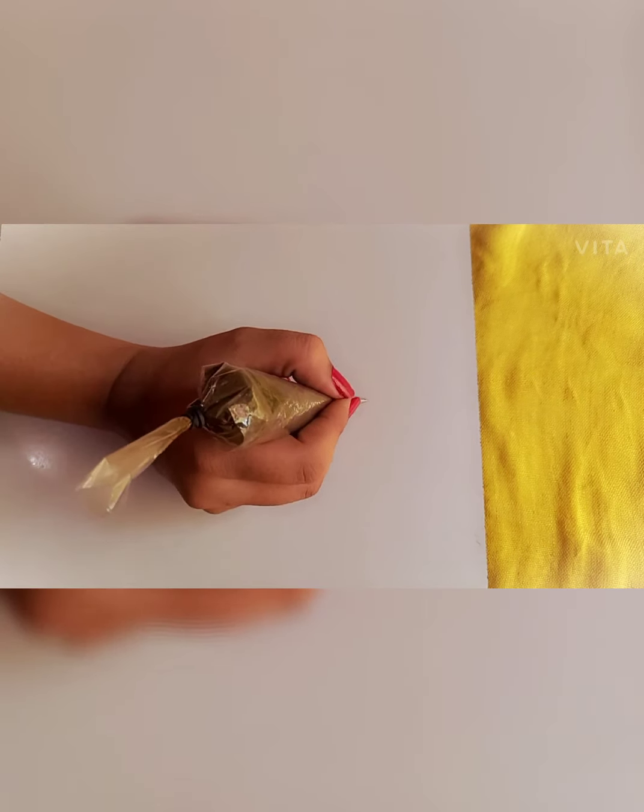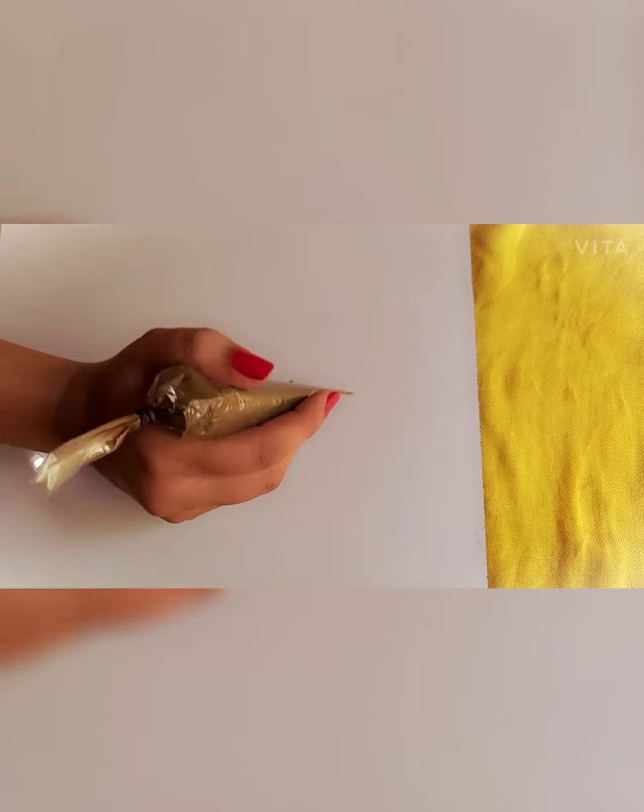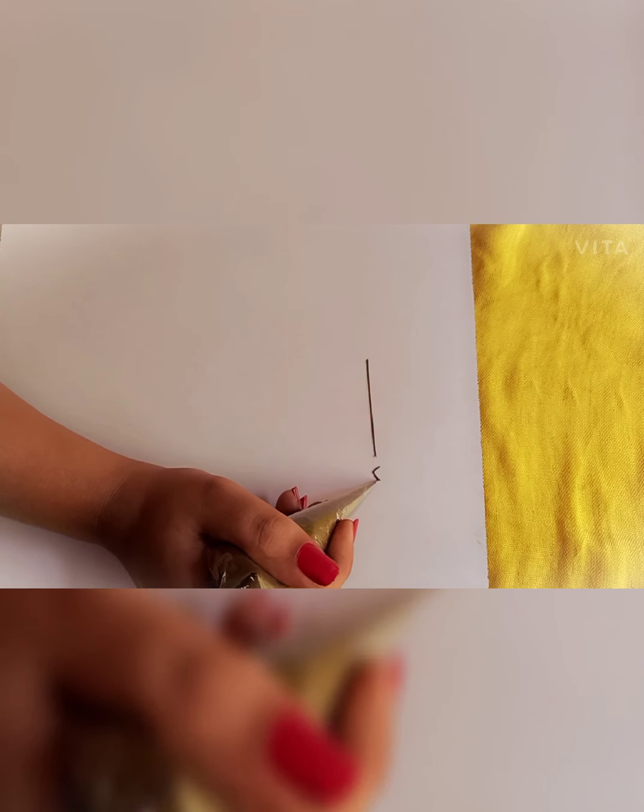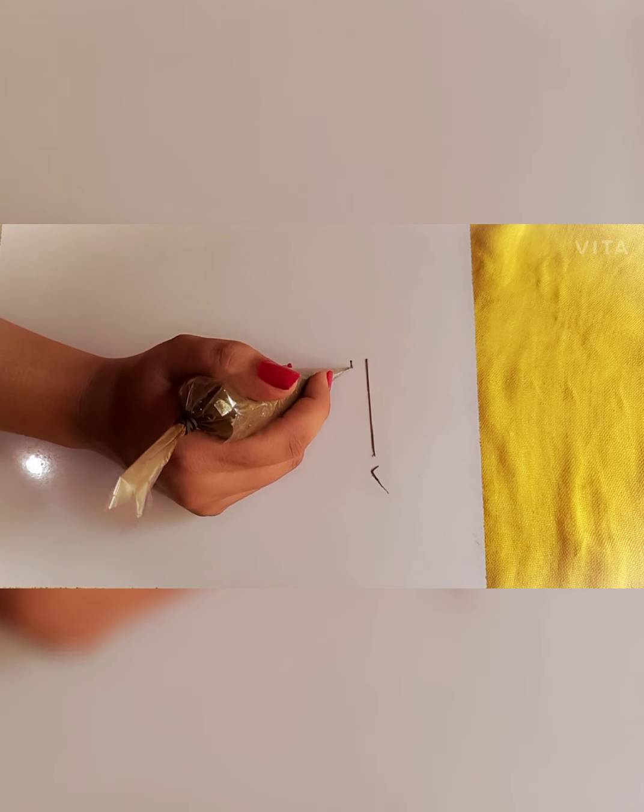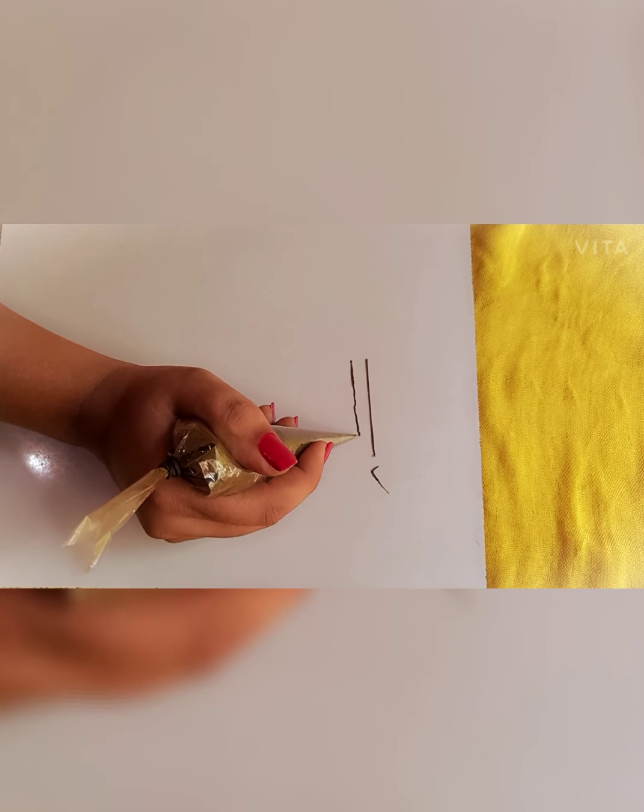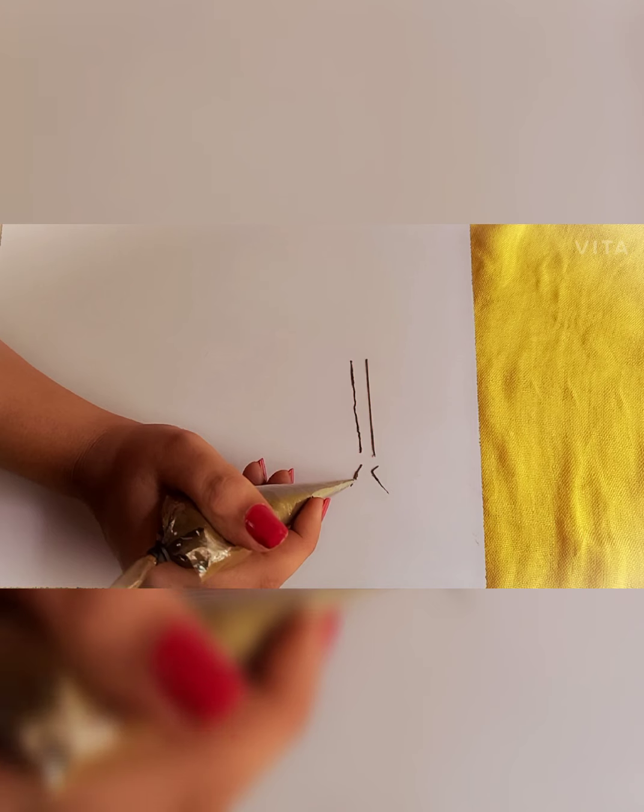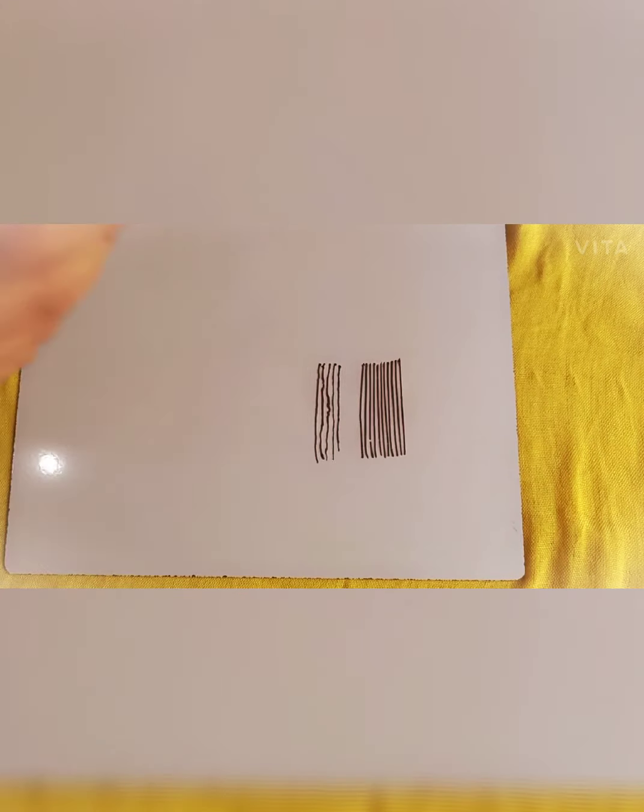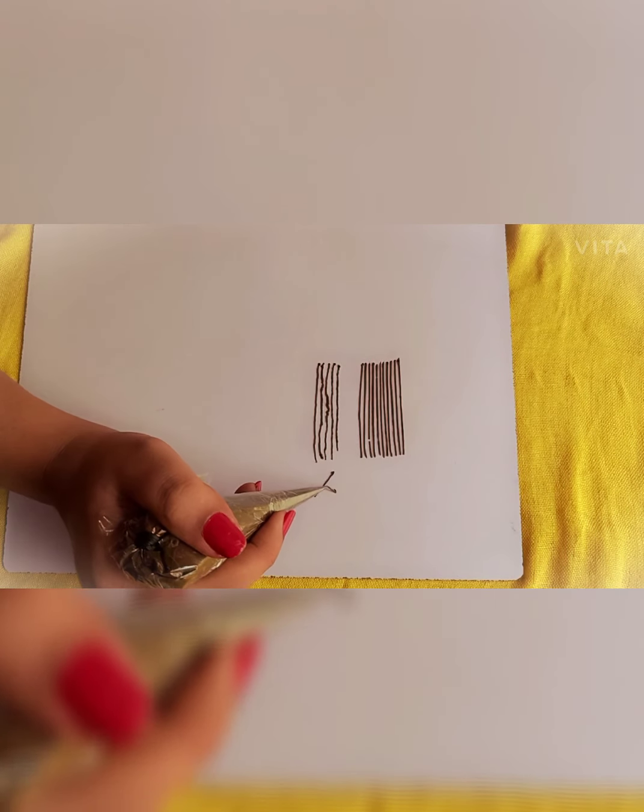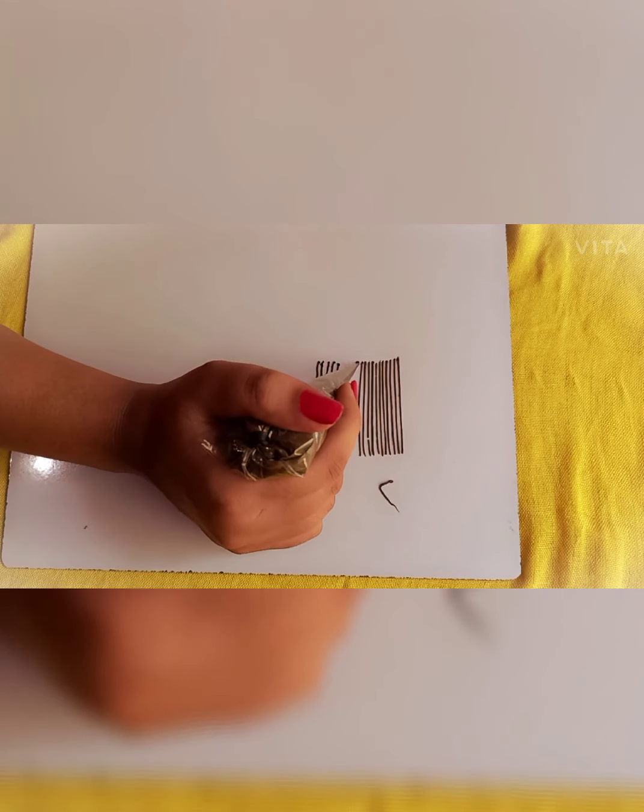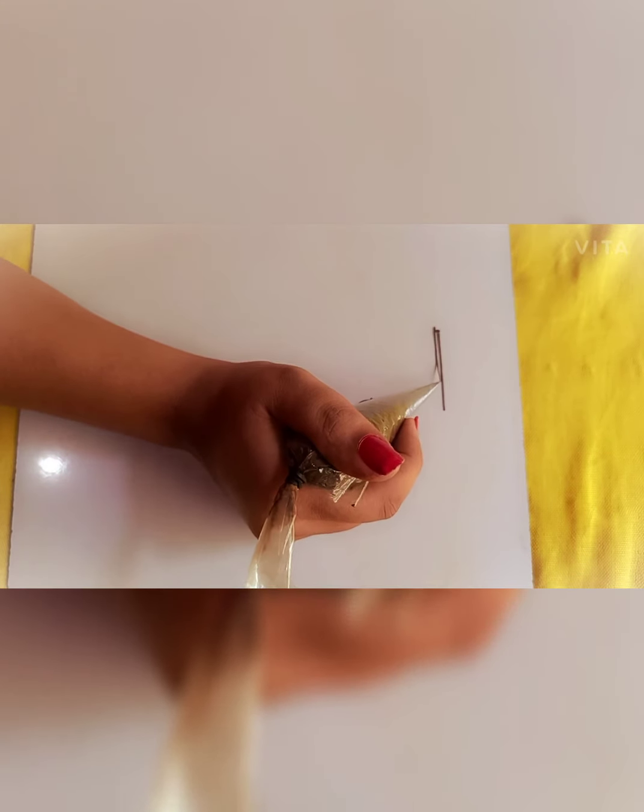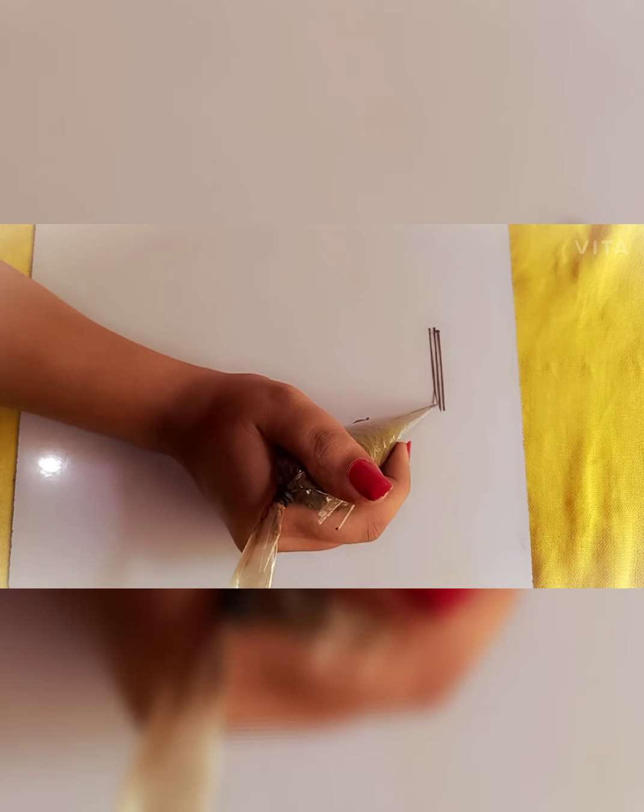Now, we can learn how to draw the line. When we draw the line, we need to hold it back properly. When we draw with the cone, we need to control it. When we learn the cone, we can practice making lines.